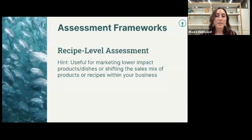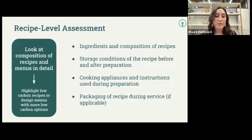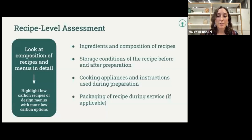Finally, we have recipe-level footprinting, which is somewhat more specific to food service businesses. It looks at the composition of your recipes and menus in greater detail, and is a great framework for businesses wanting to bring attention to low-carbon recipes already on their menus, or to design new menus with more lower-carbon options. Beyond ingredients and their quantities, these assessments take into account how the recipe is stored before and after preparation, how it's cooked, and any packaging used during service. The pros are that shifting a business's recipes or outlet sales mix is often one of the more straightforward ways to reduce impact, though similar to product-level reporting, getting more specific does come at some expense of breadth.